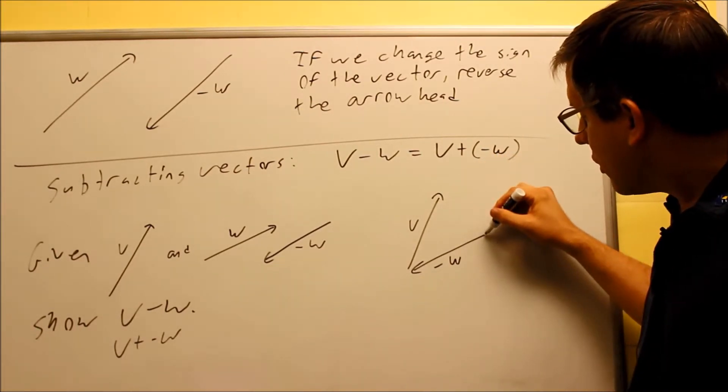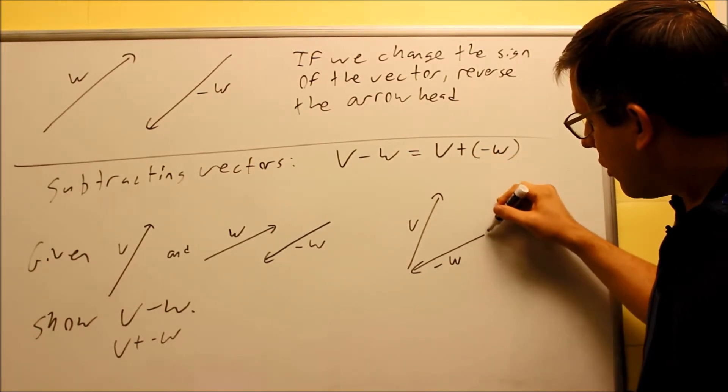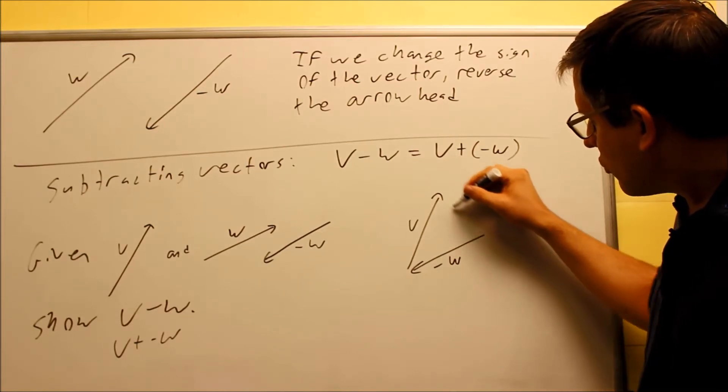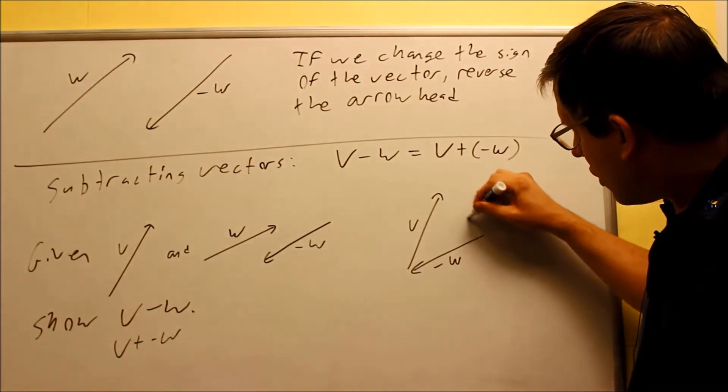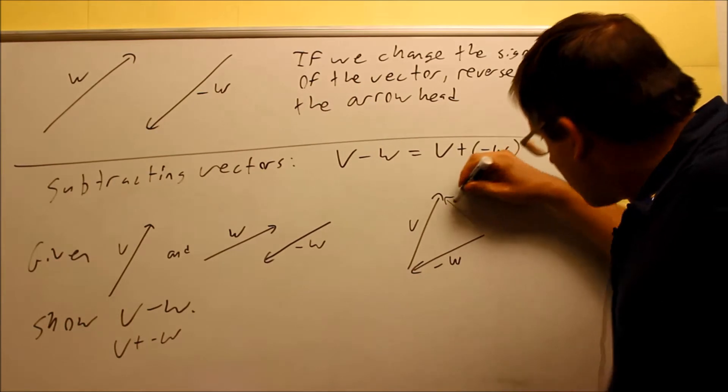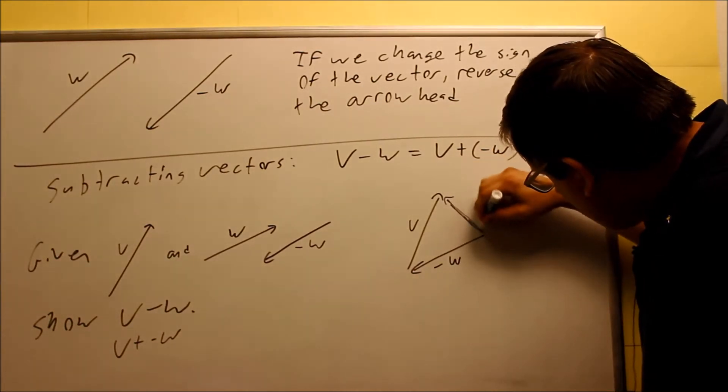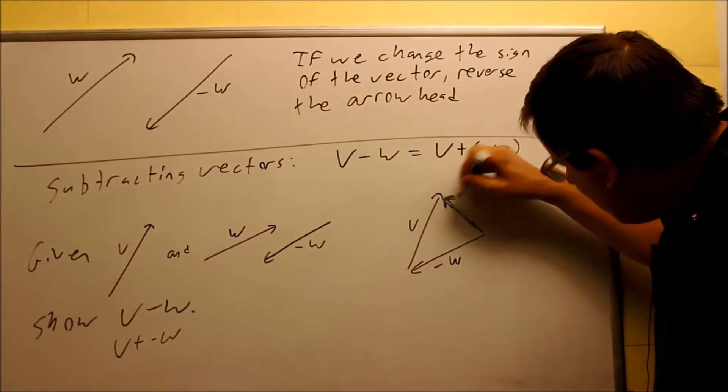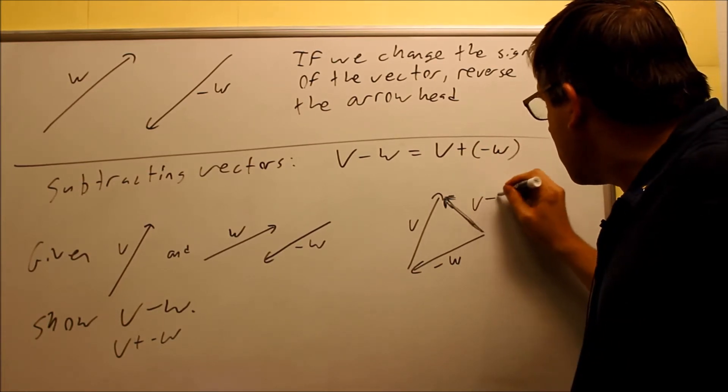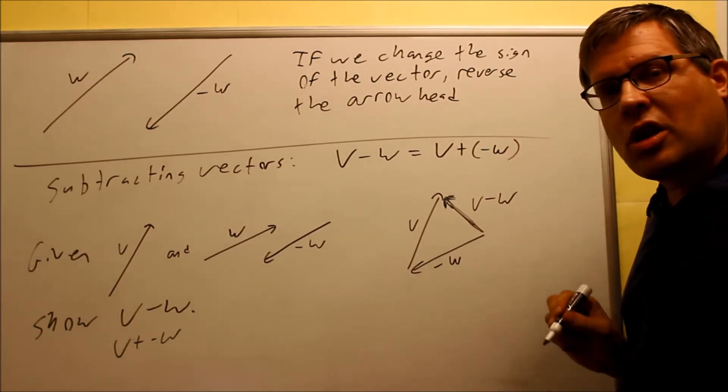Originally, it started out here. That tip, I draw an arrow from the tail on this one to here. So when I draw that right there, this result that I get, this that I'm kind of darkening in here, this would actually be the answer, and this would pictorially represent V minus W.